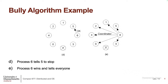Multiple elections can be in progress at the same time, each with an election ID. If both 4 and 3 had started elections, in both cases 6 would win because it is the highest ID process alive. If 7 comes back up, it can see it has the higher ID, start an election, win immediately since there is no other higher ID process, and take back the coordinator role.